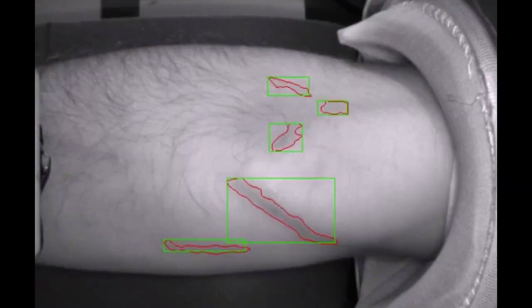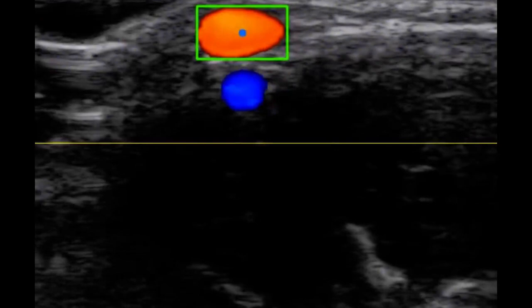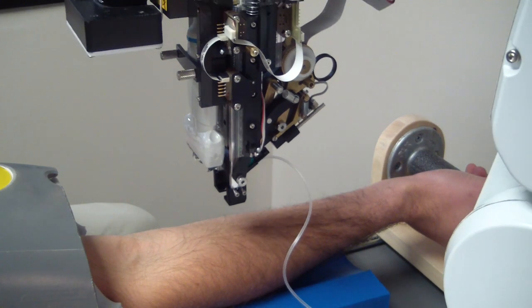It uses infrared light and image analysis to find the right vein, ultrasound to confirm the blood flow in the vein, and robotics to insert a needle into it.